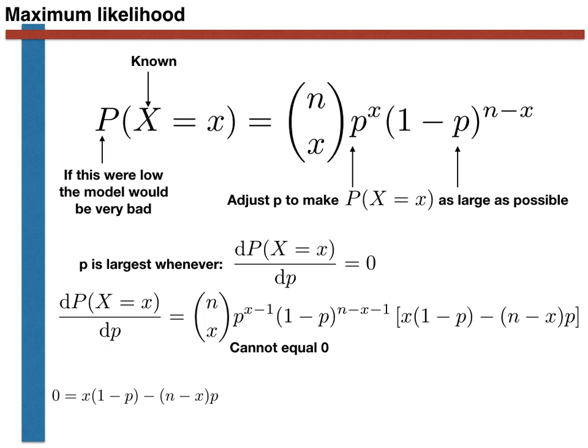If we multiply out the brackets in this expression, we find the following. We can cancel out the factors of xp and minus xp and then, once the equation is rearranged, we find that the optimal value for the parameter P is x, the result of the experiment, divided by n, the number of experiments that were performed.